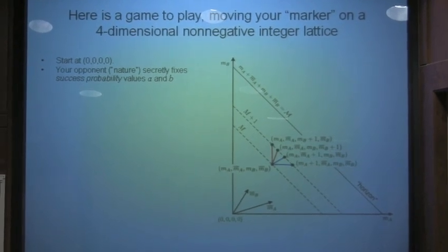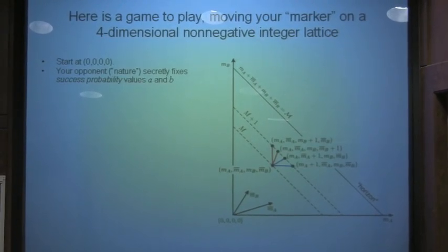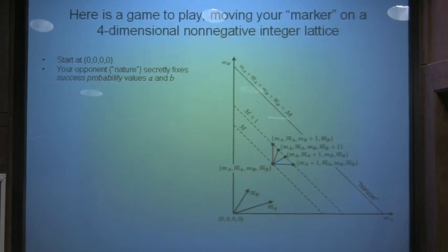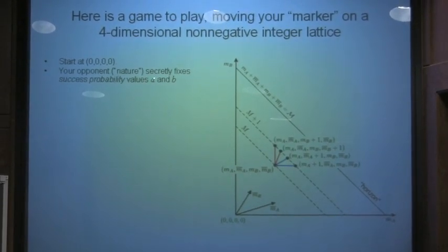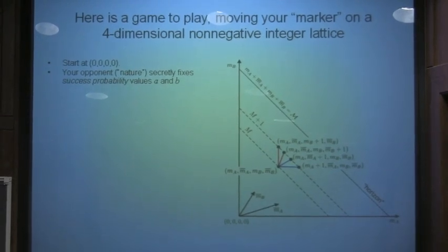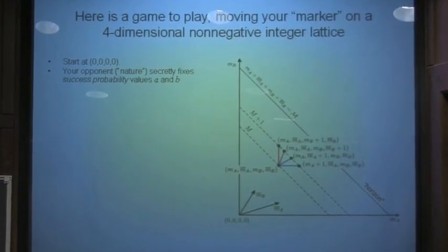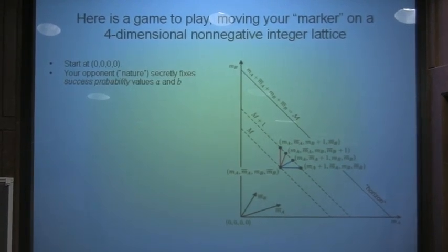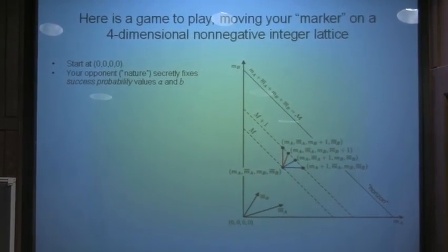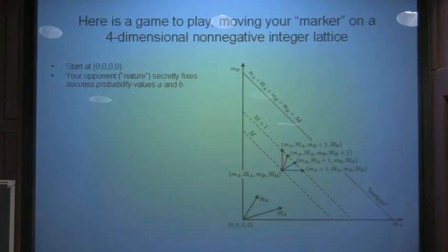Our opponent is nature, and nature gets to do only one choice of strategy. Nature gets to pick success probabilities, A and B, that correspond to some choices of ours. So nature fixes those success probabilities once and for all.